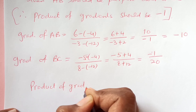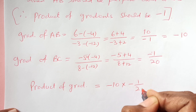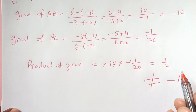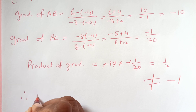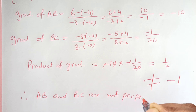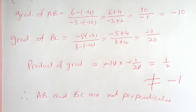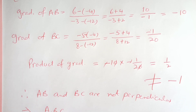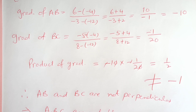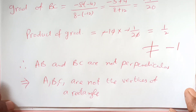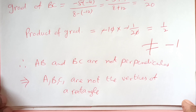Now the product of gradients is negative 10 times negative 1 over 20, which equals one half, and that is not equal to negative 1. Therefore AB and BC are not perpendicular. Since the lines are not perpendicular, we conclude that A, B, C are not the vertices of a rectangle.